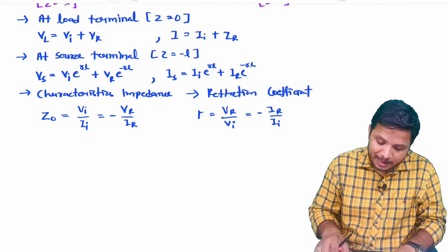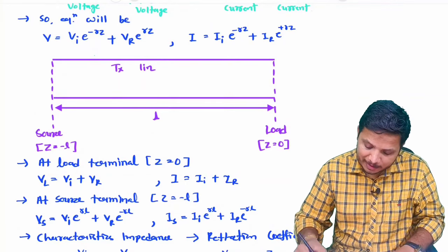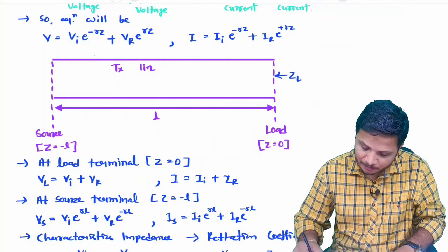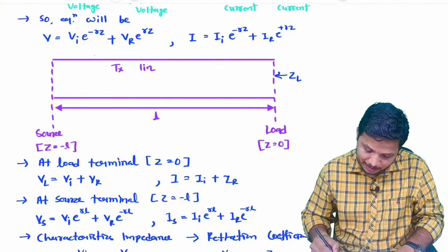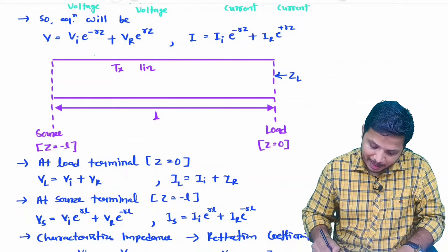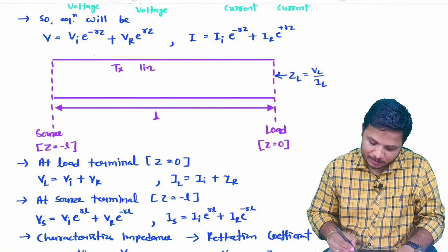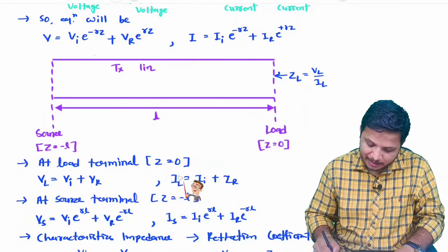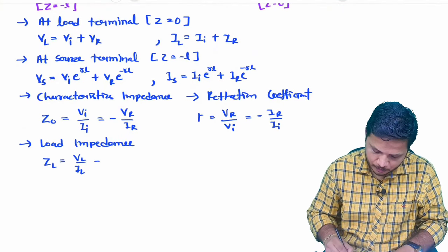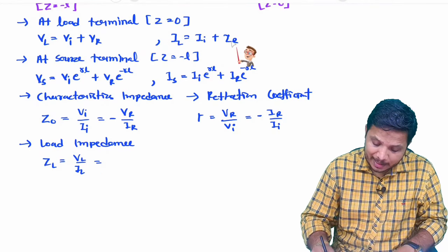Now I will derive the reflection coefficient based on load impedance. We have load impedance ZL, and ZL = VL / IL, that is, load voltage divided by load current. Substituting, VL = Vi + Vr and IL = Ii + Ir, so ZL = (Vi + Vr) / (Ii + Ir).